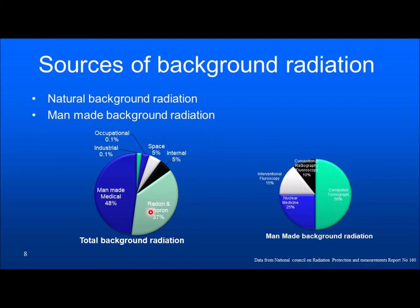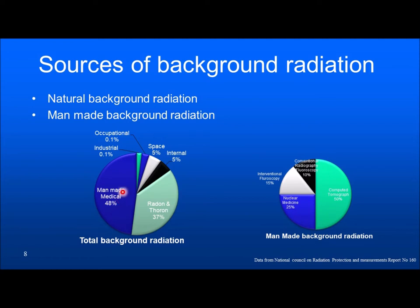Radon and Thoron give rise to about 37% of the natural background. Internal is about 5%, space is about 5%, occupational 0.1%, industrial 0.1%, and man-made — which is basically medical — is about 48%. If you look at the same data in the 1980s, the man-made medical contribution was only about 15 to 20%. It has now increased to about 48% of the background radiation.